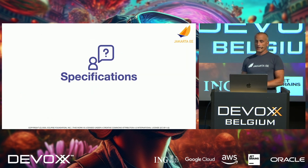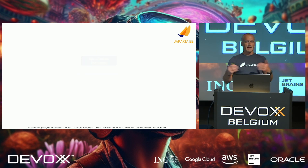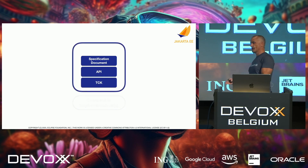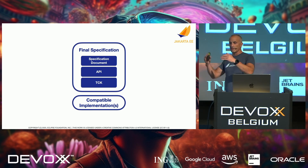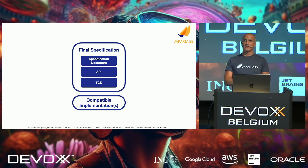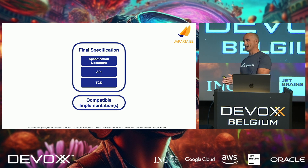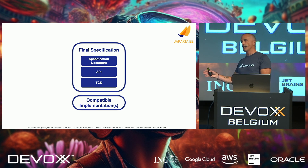When we talk about Jakarta EE, we talk about the specifications. I like to start my talks with this slide and explain what the elements of a specification in Jakarta EE are. We have a specification document which in textual form describes what a specification is and all the requirements it consists of. There is an API artifact which you would probably use from Maven Central when programming against the specification, and there's a TCK or Test Compatibility Kit which tests that an implementation fulfills all the requirements.